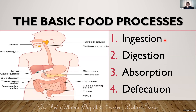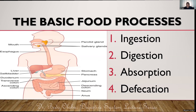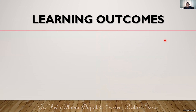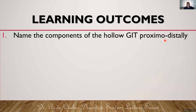Those are the basic food processes. I've taken you through those steps because you're not going to discuss them in anatomy, but it's important that you know about them. Our learning agenda: the first thing we are going to do is name the components of the hollow GIT from the proximal part to the distal part.